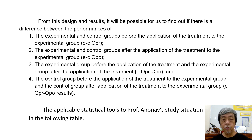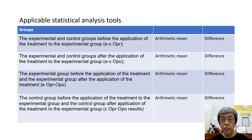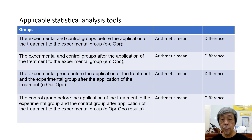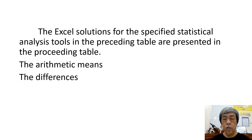The applicable statistical tools for Professor Anonai's study are presented in the following table. Only arithmetic mean and difference will be used. No test of significance can be used because the samples are non-probability. The Excel solutions for the specified statistical analysis tools are presented in the preceding table.